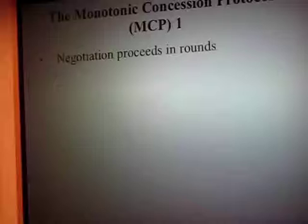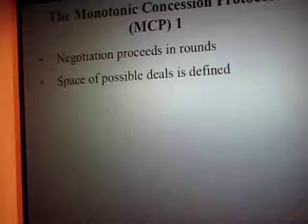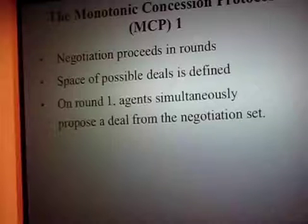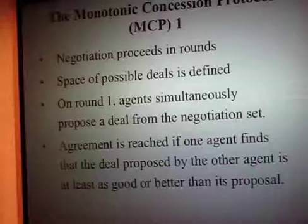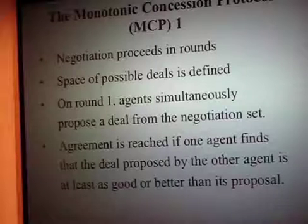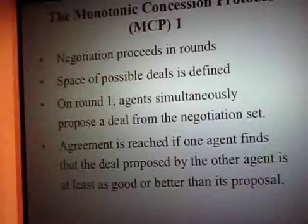The monotonic concession protocol is extremely simple. Compared to voting, it assumes that there are several rounds and two participants. There is a space of possible deals that is defined. On the first round, agents simultaneously propose a deal from the negotiation space. Agreement is reached if one agent finds that a deal proposed by another agent is at least as good or better than its previous proposal. Normally you exchange deals and finally find a deal that is good for both agents.